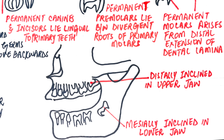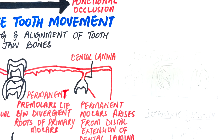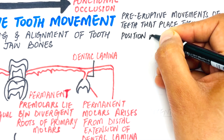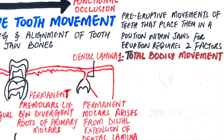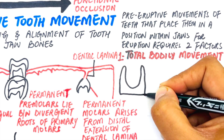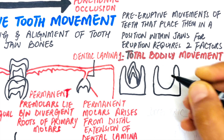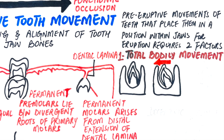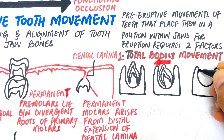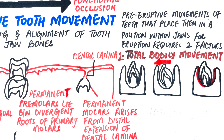The pre-eruptive movements that place tooth germs in position within the jaws for eruption are a combination of two factors: bodily movement and eccentric growth of the tooth germs. Bodily movement is the movement of the tooth germ as a whole, along with its bony crypt. For example, during bodily movement in a mesial direction, bone resorption by osteoclasts occurs on the mesial surface of the crypt wall, while bone deposition by osteoblasts occurs on the distal wall as a filling-in process.